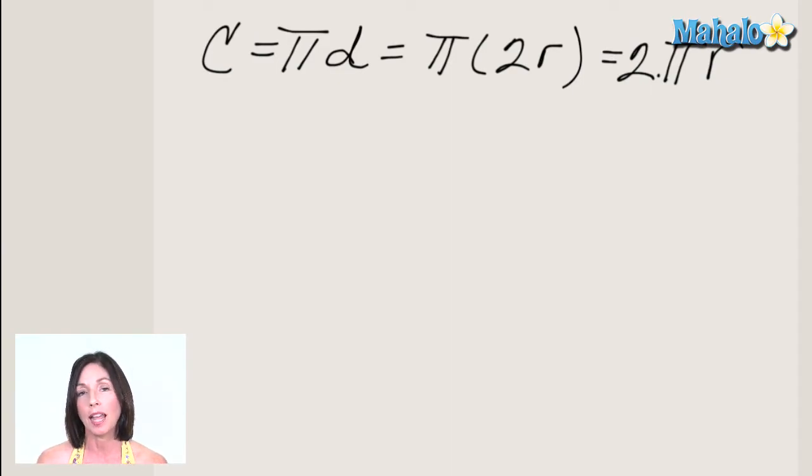He discovered, and then it was discovered more strictly later on, that for any circle, if you take the distance around the outside of it and divide it by its diameter, you always get the same constant value, and that constant value is pi.